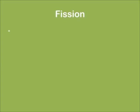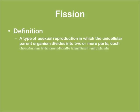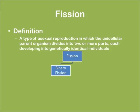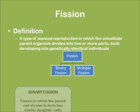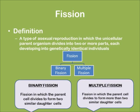Fission is a type of asexual reproduction in which a unicellular parent organism divides into two or more parts, each developing into a genetically identical individual. Binary fission is the type in which two daughter cells are similar. Multiple fission is the type in which two or more than two similar daughter cells are formed.